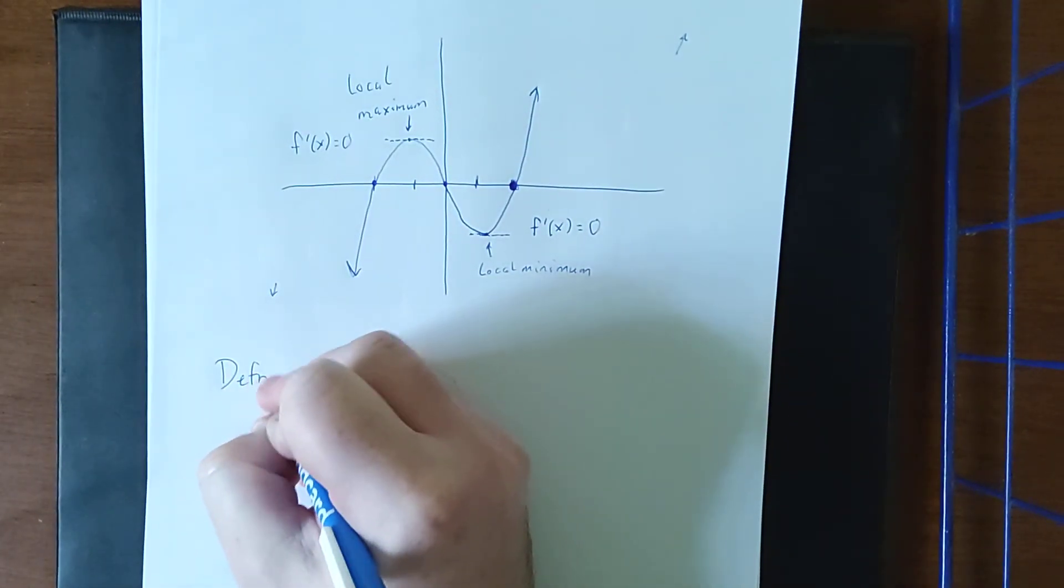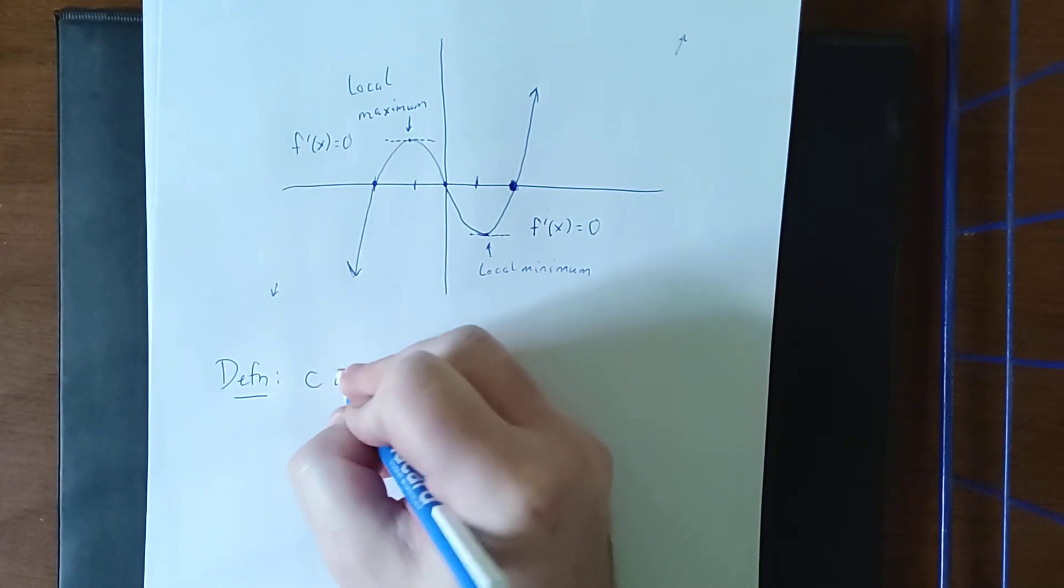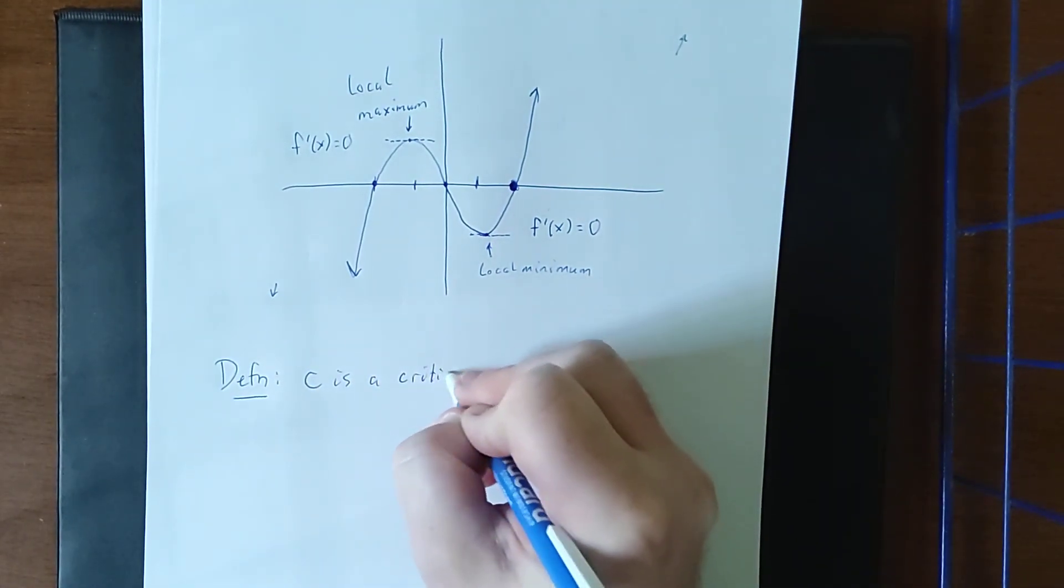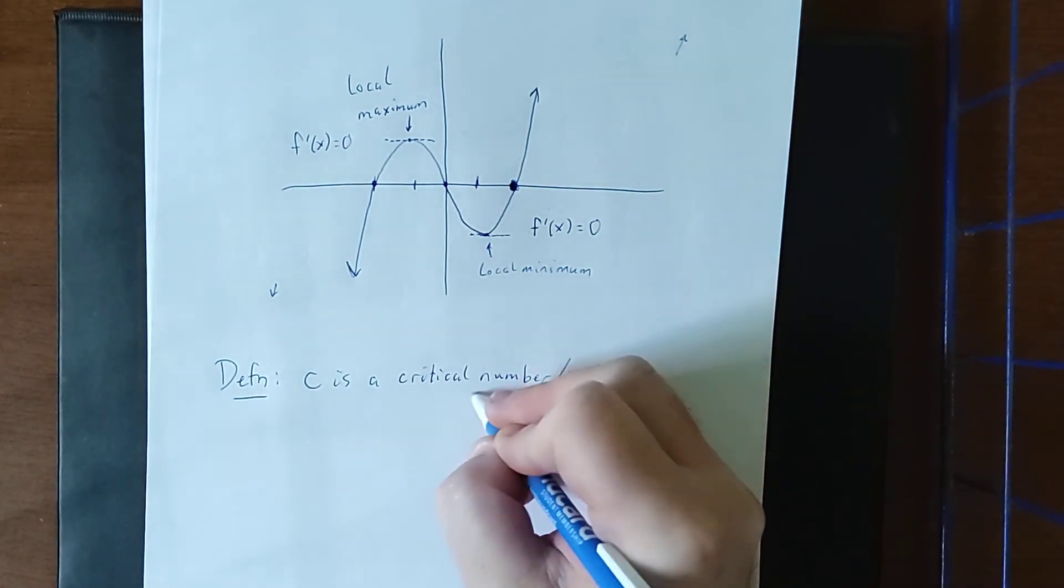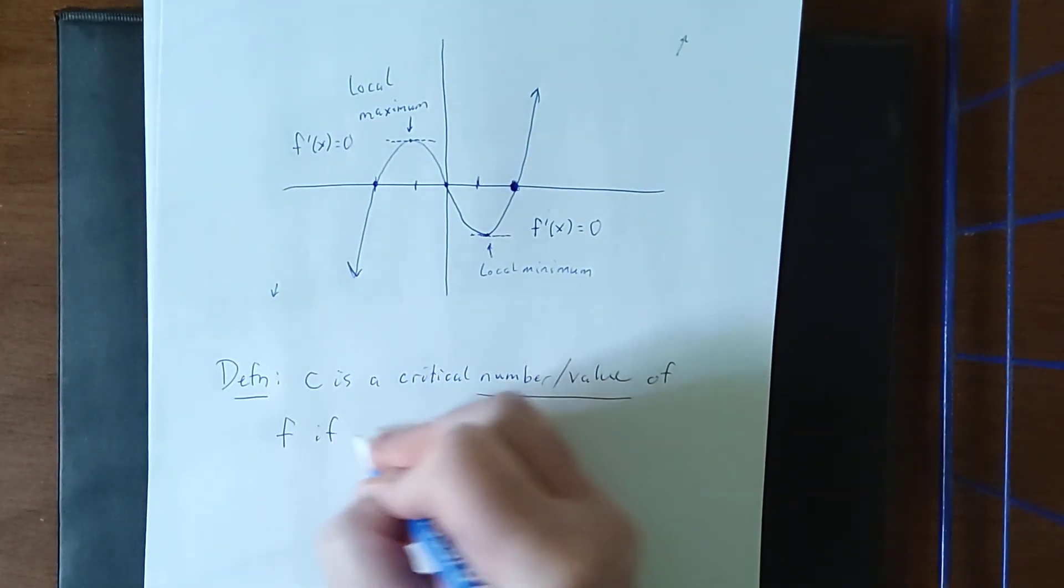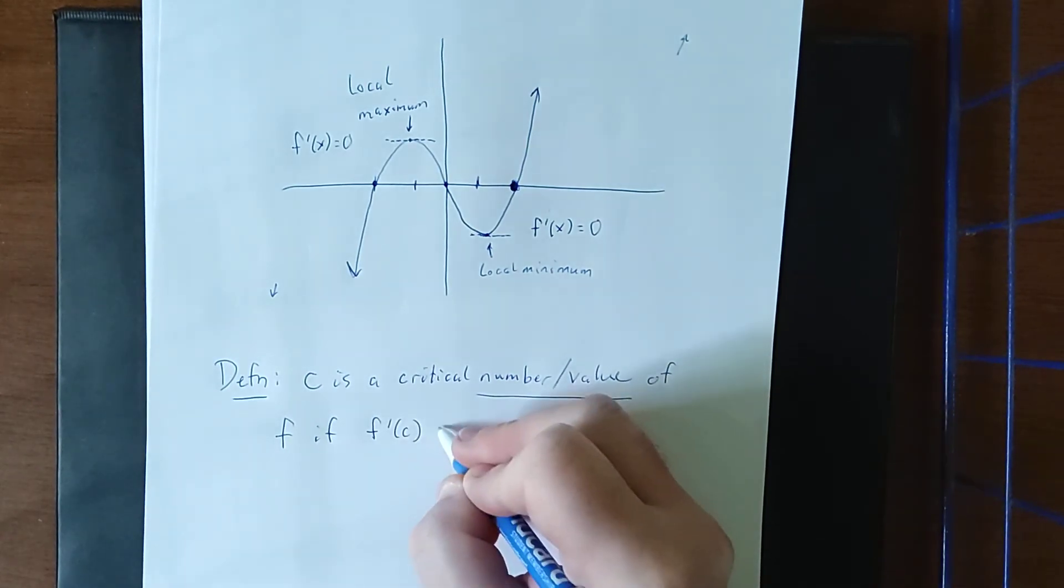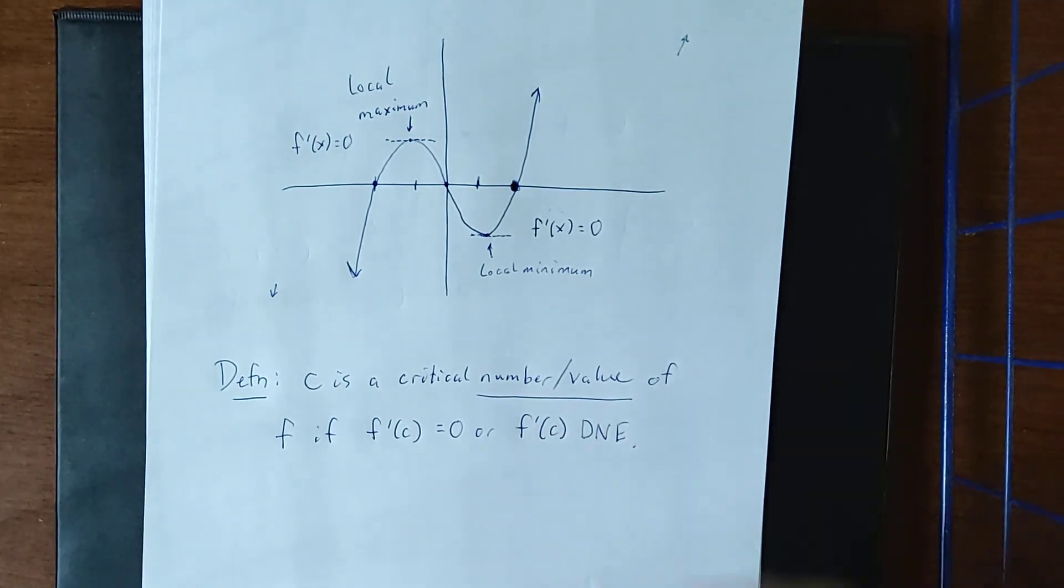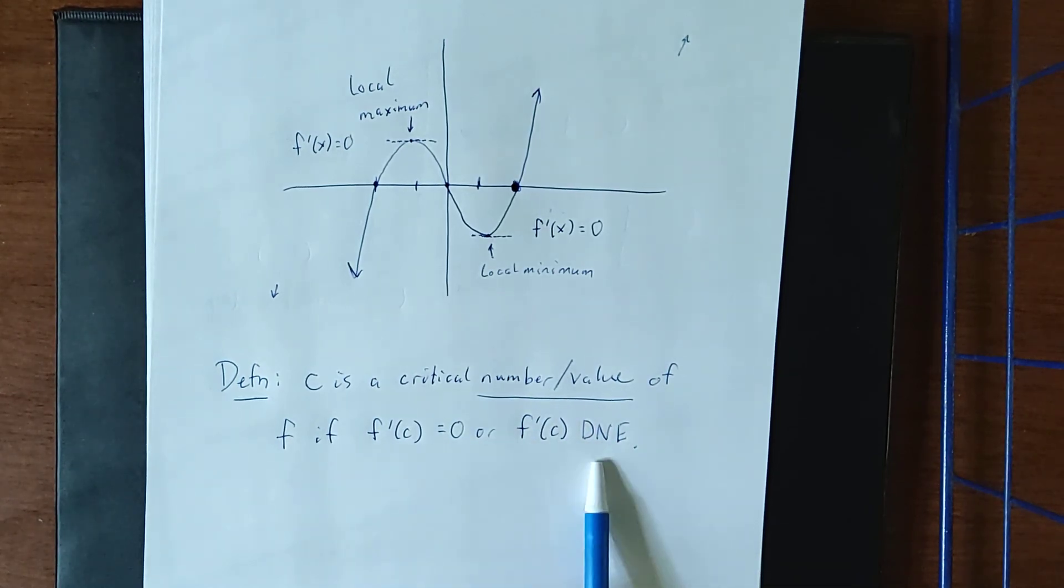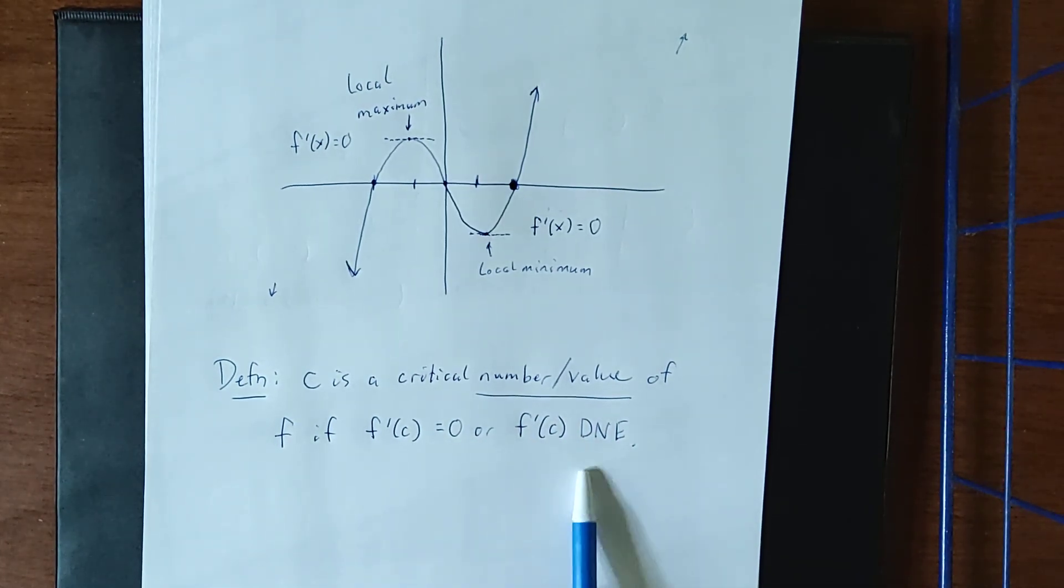Now, c is a critical number or critical value of a function f if f'(c) = 0 or f'(c) does not exist. As we continue our hunt for these maximum and minimum values, one of the big things we're going to be looking for will be these critical points. As such, it's important that we have this definition and we have a plan moving forward. Take a derivative, figure out where it either does not exist or set it equal to 0 and solve for the corresponding value of c.